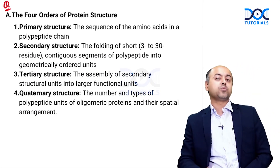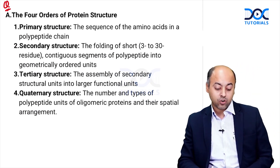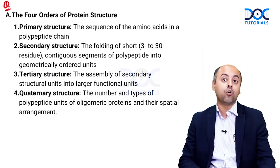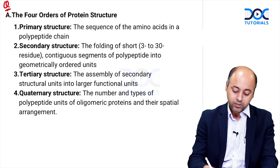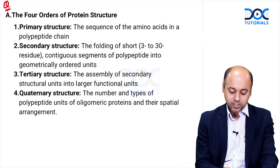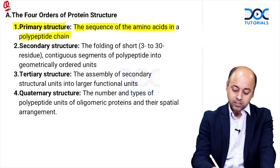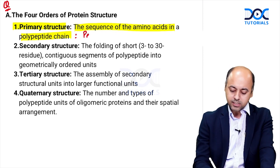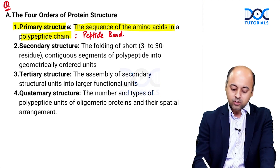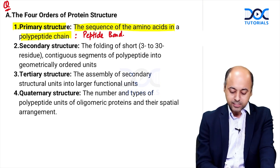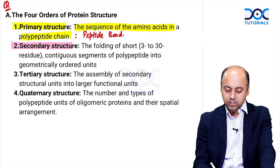The second very important question is the four orders of protein structure and the nature of the bond in each. Starting with primary structure: it is the sequence of amino acids in a polypeptide chain. The nature of the bond in this case is the peptide bond — remember, the peptide bond is a covalent bond.